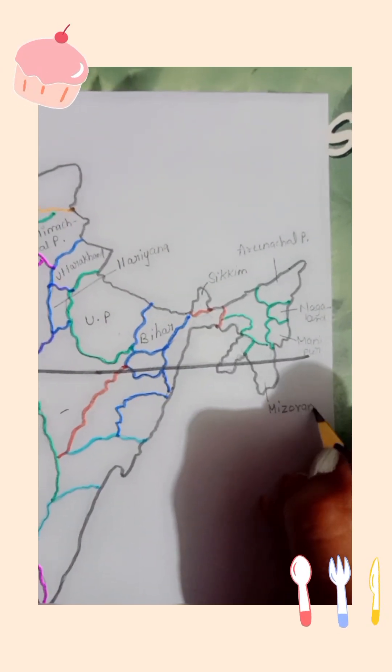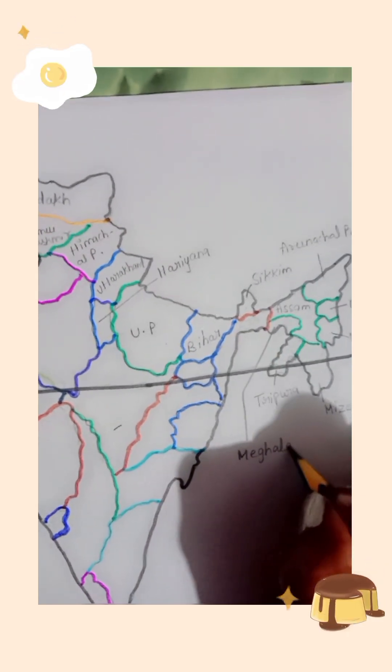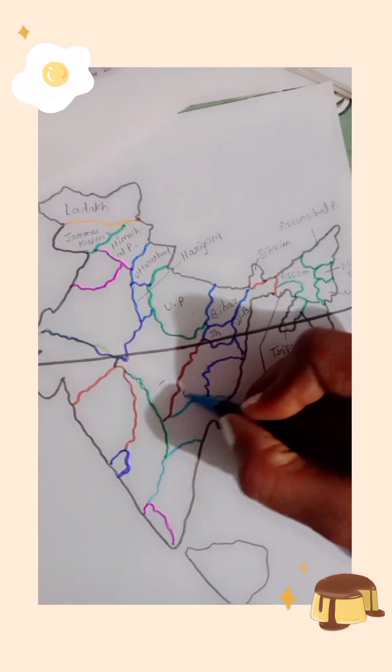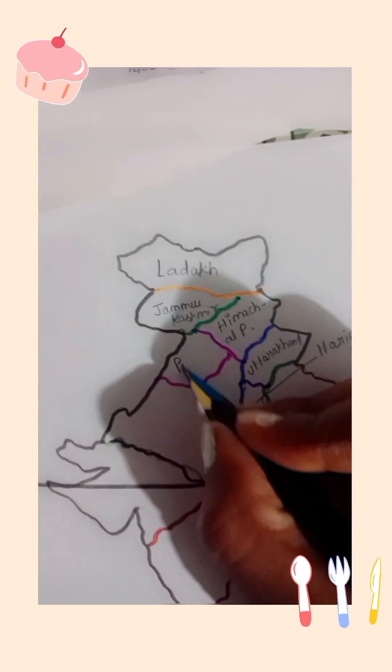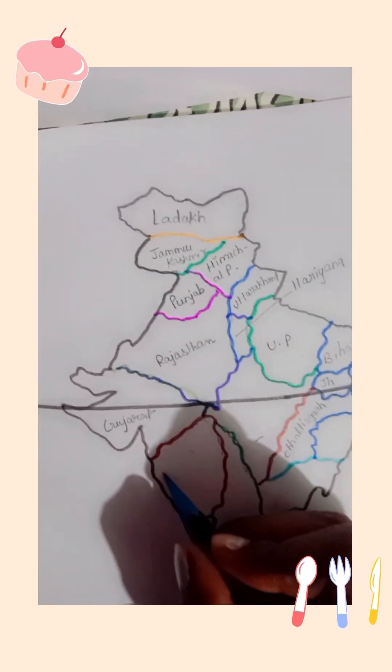And this is our Andhra Pradesh. And this is our Meghalaya. Nagaland. Mizoram. Tripura. Assam. Meghalaya.